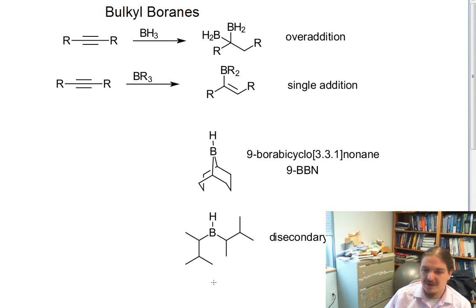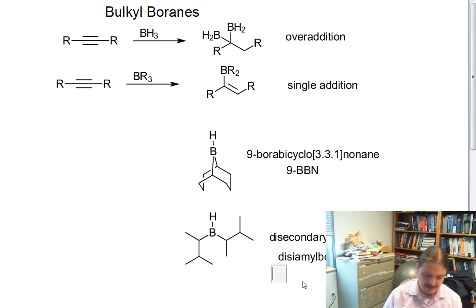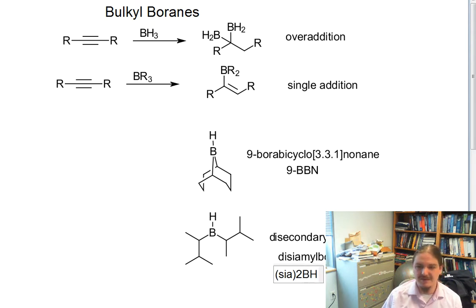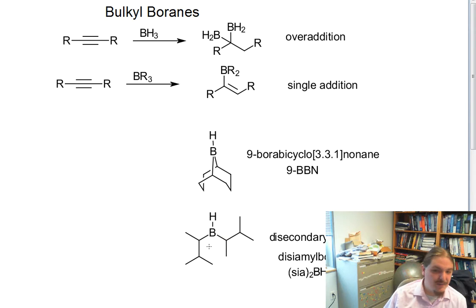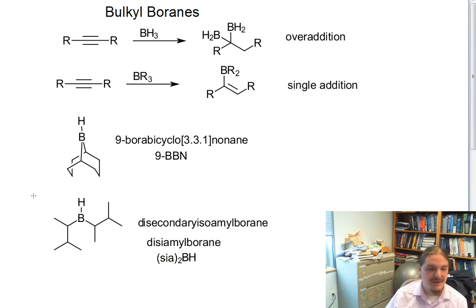The other compound is di-secondary isoamyl borane, with the slightly abbreviated name disyamyl borane. You might actually see the SIA (secondary isoamyl) in parentheses like some kind of substituent. Disyamyl borane has a chirality center — or two — and can be prepared enantioselectively, giving some enantioselective outcomes, though this is not actually important for alkyne hydration but has other uses.